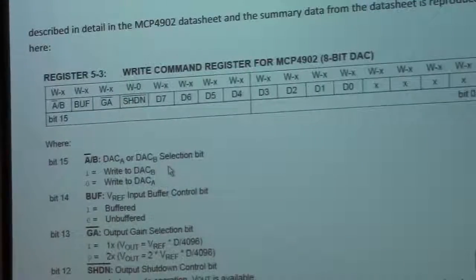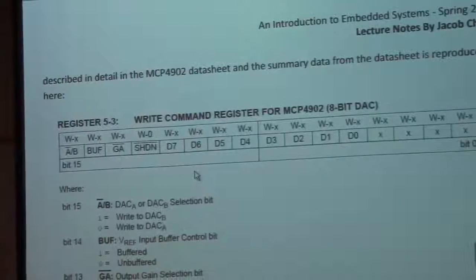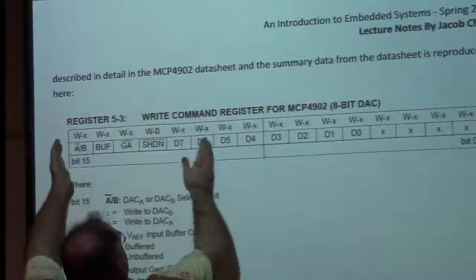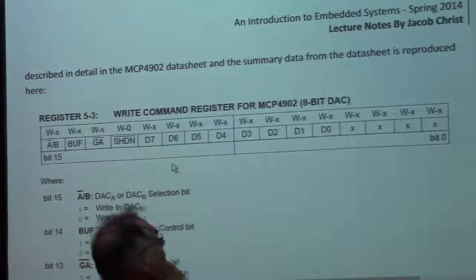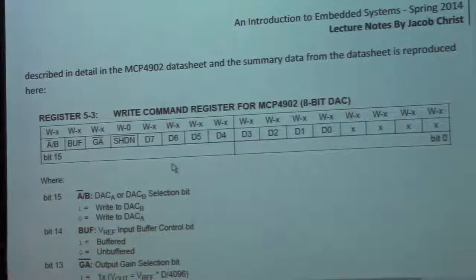And again, here's the register. So you can see here's one byte, here's the other byte, here's four bits of data, here's four bits of data, four don't cares at the end, and some setup bits at the beginning.